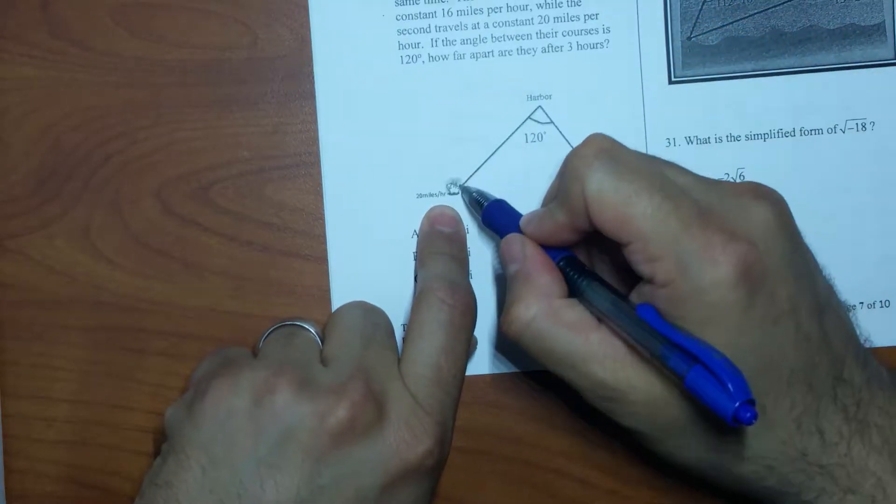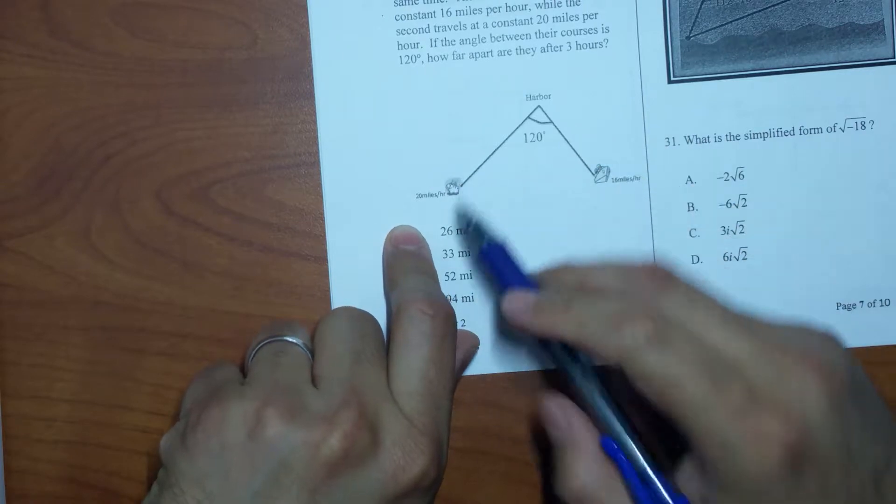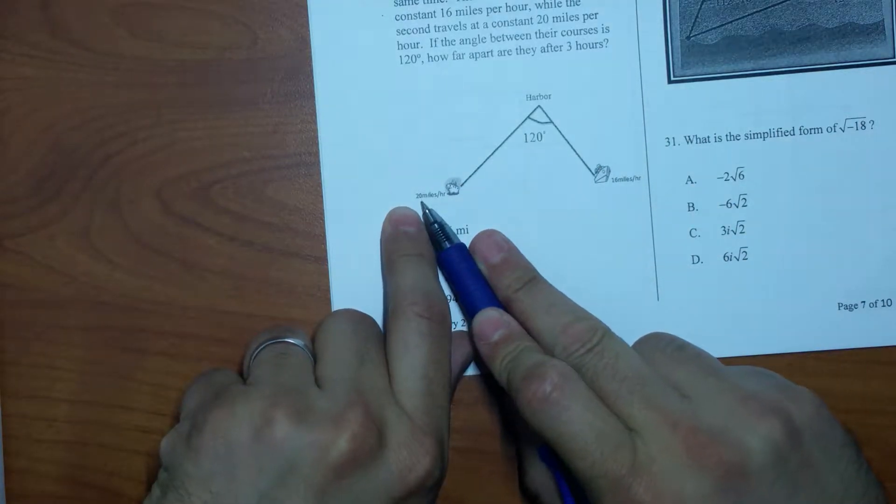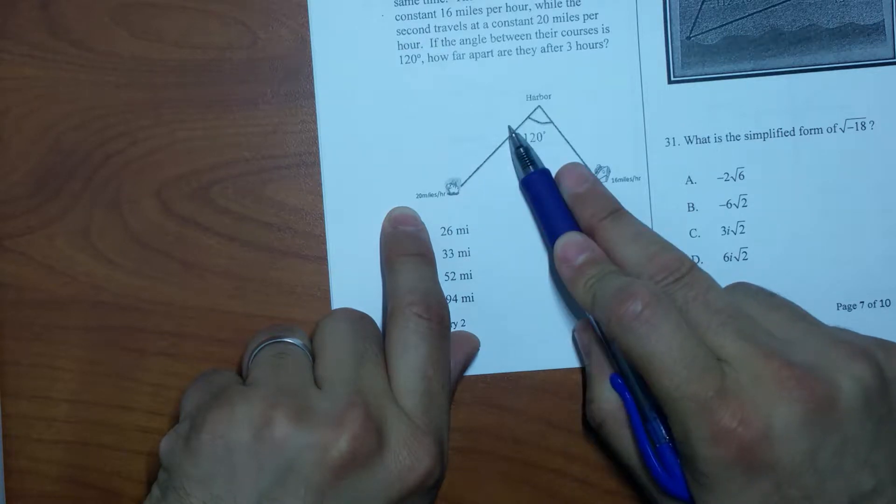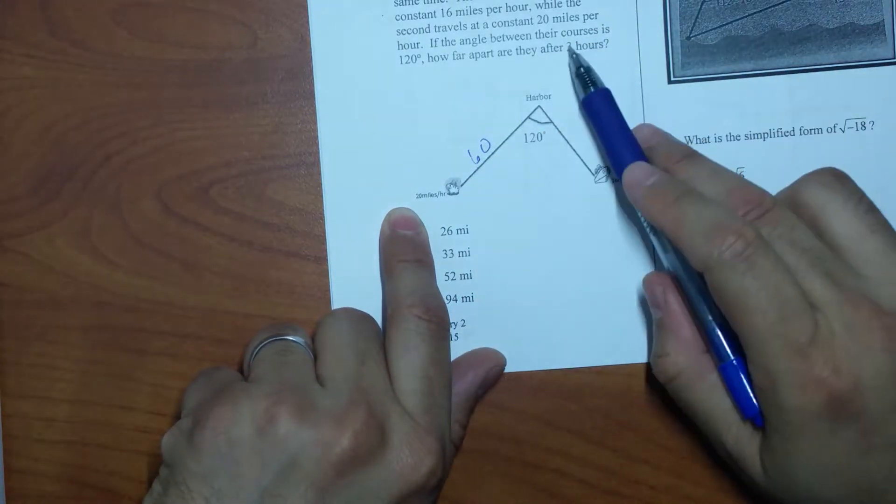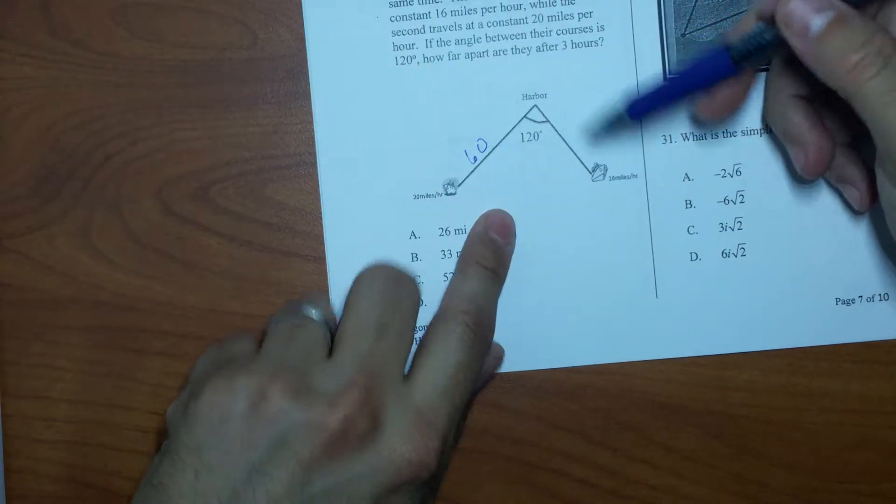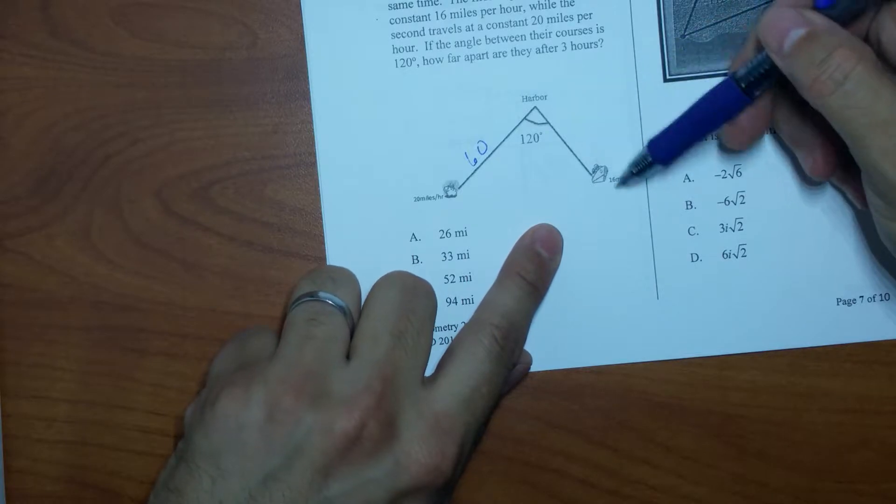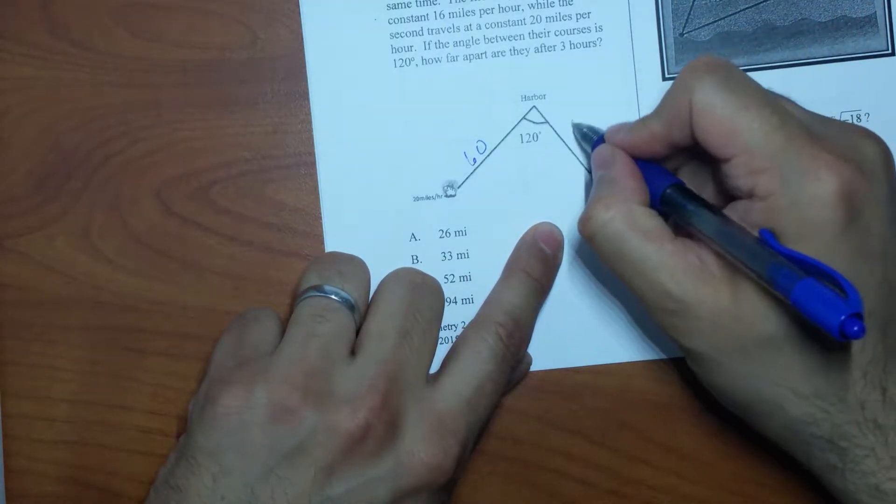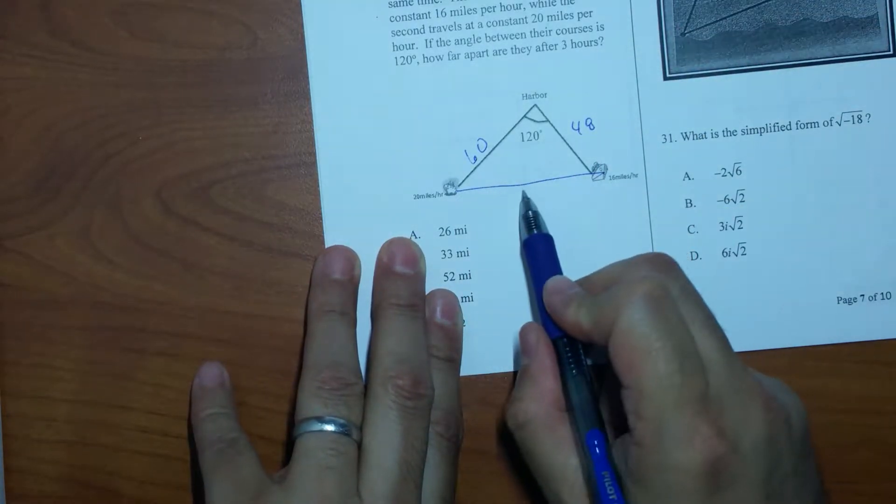So what's this distance right here? This one's going 20 miles per hour, so how far is this one? 60. Where did I get 60 from? 3 hours times the 20, so I get 60 there. What about this one right here? This one is 16 miles per hour, so that's going to be 16 times 3, 48. Now the distance apart is going to be this value right here.